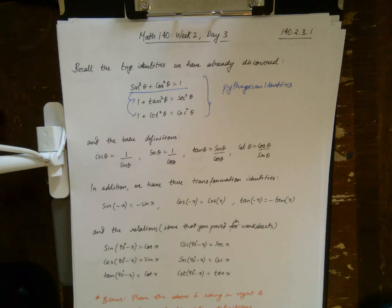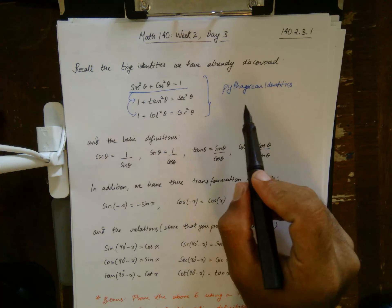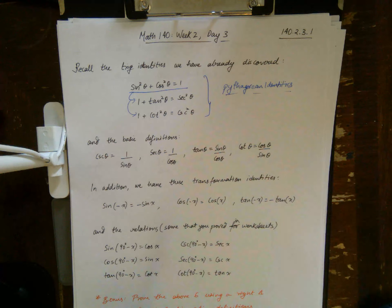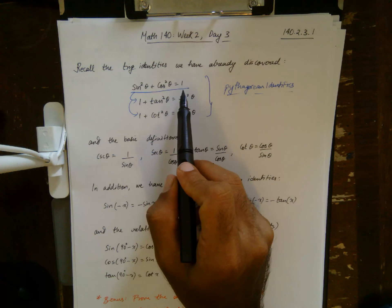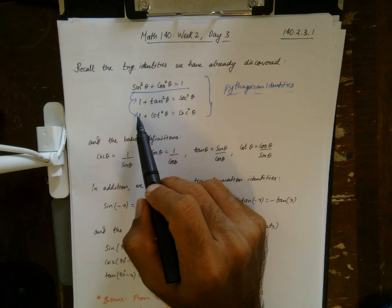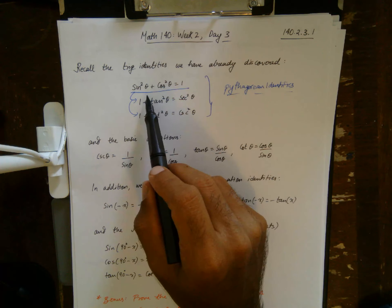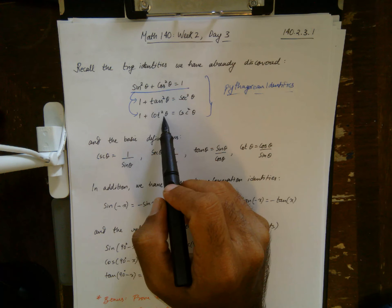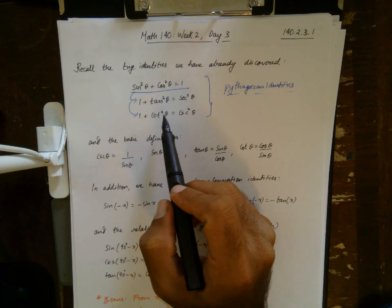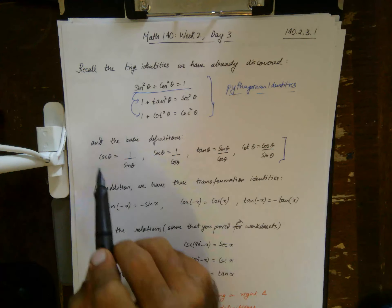Hi everyone, this is the first video for Day 3. We're going to talk about trigonometric identities. We've actually already seen a few of them — recall these three, which we call Pythagorean identities because they can be proved using the Pythagorean theorem. The fundamental one is sine squared plus cosine squared equals one for any angle, and from there you can get the remaining two. To get 1 + tan² you divide both sides by cosine squared, and to get 1 + cot² you divide both sides by sine squared.